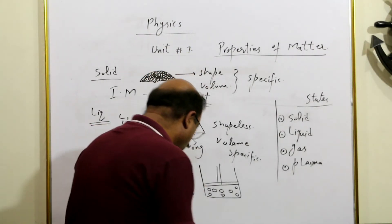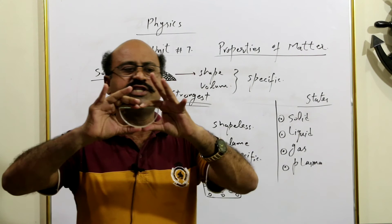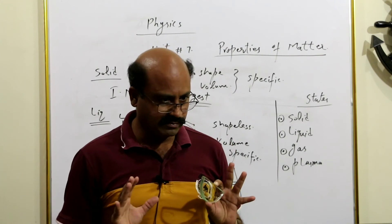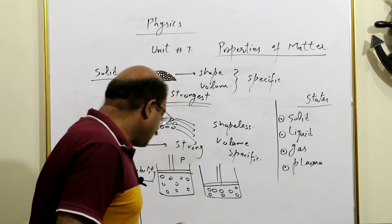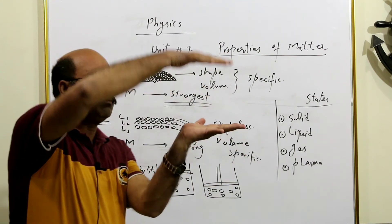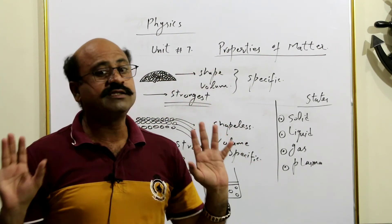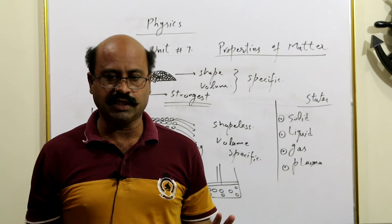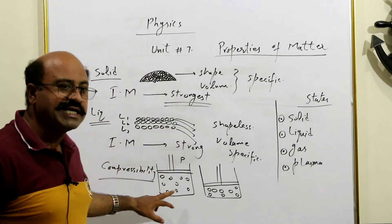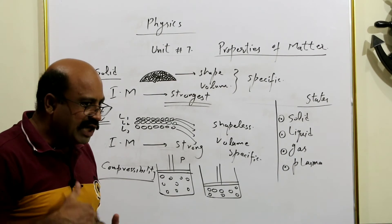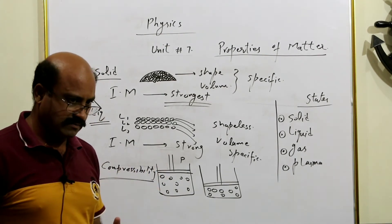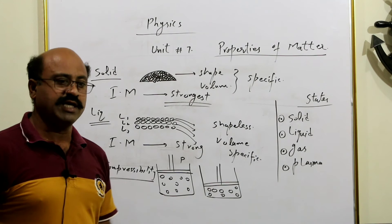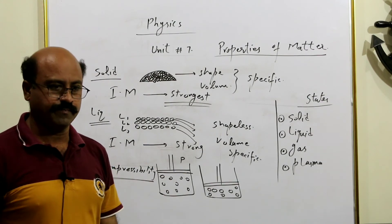Jo solids hain — jitna marzi un ke upar pressure daalo, unki shape mein change nahi la sakte, because solids cannot be compressed. Isi tarah liquid ko kisi bartan mein le ke upar se pressure daalo toh woh bhi dab nahi sakte, kyunke un ke darmiyan itna zyada gap nahi hota ke woh gap minimize kiya ja sake. Okay, but gases can be compressed easily due to larger intermolecular distances. Yani jitne intermolecular distances aap kam karna chahein, kar sakte hain — pressure daal ke, temperature down kar ke.